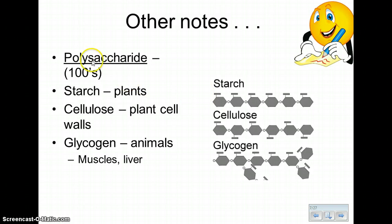Other notes: a polysaccharide may have up to a hundred or maybe more units of glucose or fructose all connected together. Depending on where that polysaccharide is found, we have slightly different names. When it's in a plant, we call it starch. When it makes up the plant cell wall, the polysaccharide is cellulose. And then lastly, when we have a polysaccharide in animals, we call that glycogen.